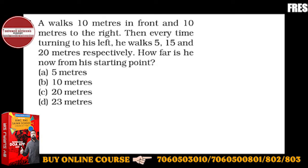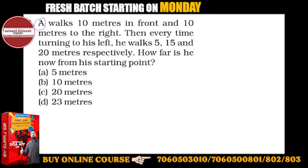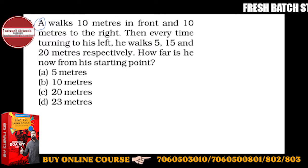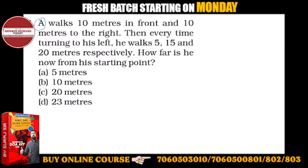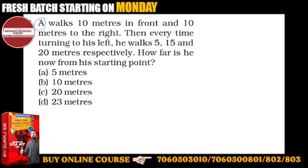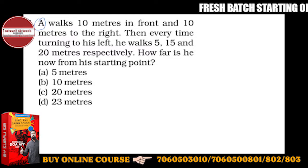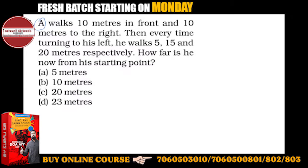Question number six: A — that's the name of a person — walks 10 meters in front and 10 meters to the right. Then every time turning to his left, he walks 5, 15, and 20 meters. How far is he from his starting point?